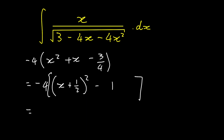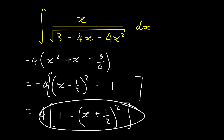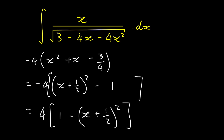The next thing we're going to do to make this easier is to distribute this negative back in. So now we have 4 into 1 — because this negative 1 times by negative is going to be positive 1 — minus x plus 1 over 2, all squared. And now we can put this completed square form of what's inside the root back into the integral to make it easier. So let's go ahead and do that.